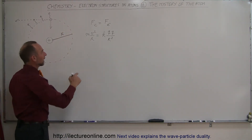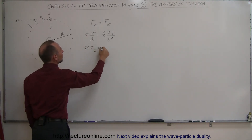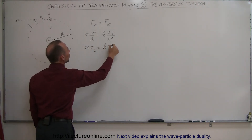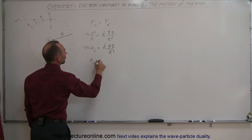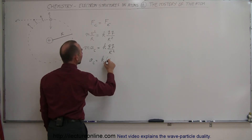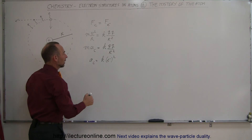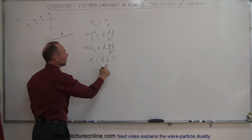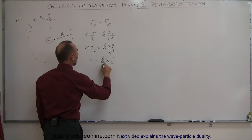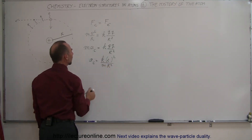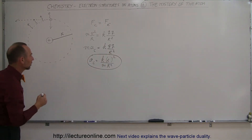It turns out that v² over r, by definition of acceleration — so this is the mass times the centripetal acceleration — is equal to kqq over r². We can say that the centripetal acceleration is equal to k times the electron charge squared, divided by the mass, divided by the radius squared. So we can see that there is indeed an acceleration term here.